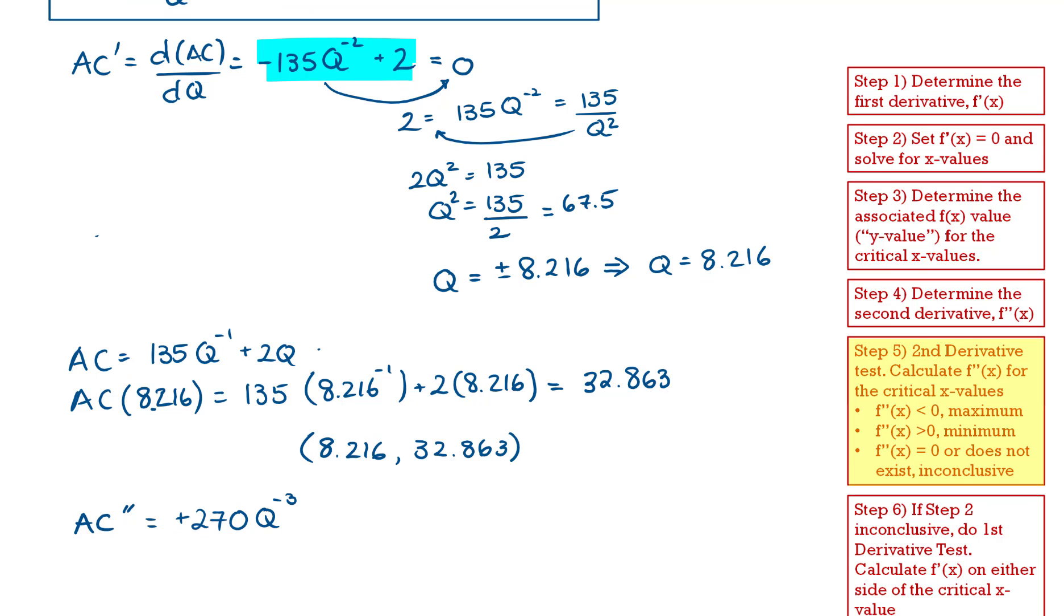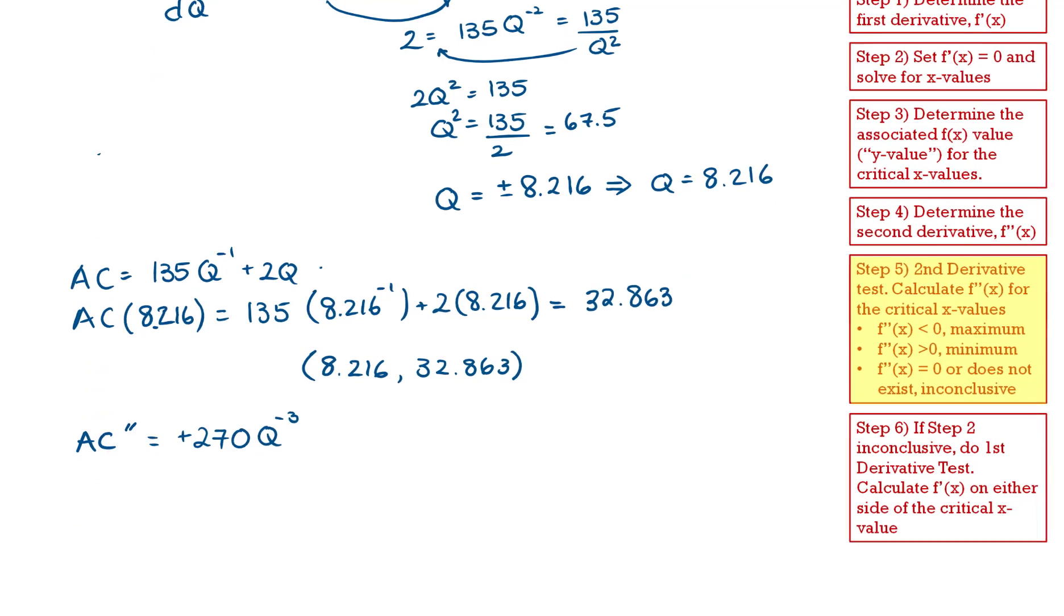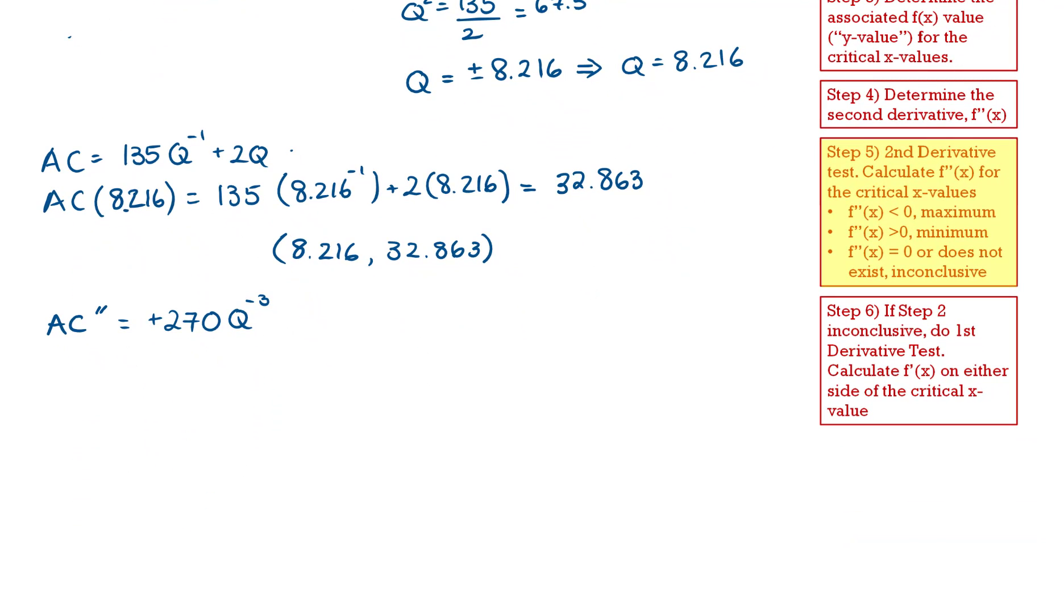Now the next step is to determine this second derivative value at our critical points. In this case, singular critical point of 8.216. So when Q value is 8.216, the second derivative becomes 270 times 8.216 all to the power of negative 3. And this gives me 0.487.